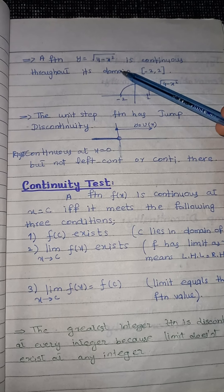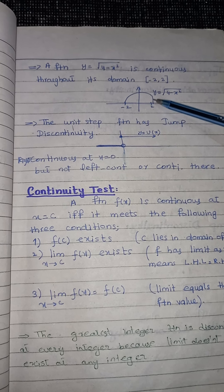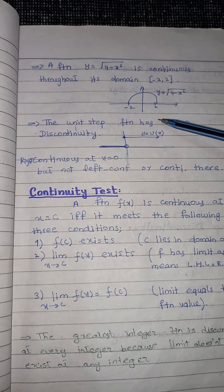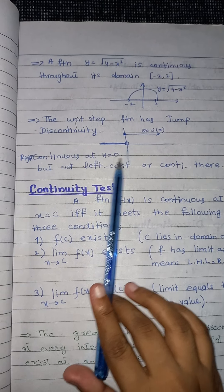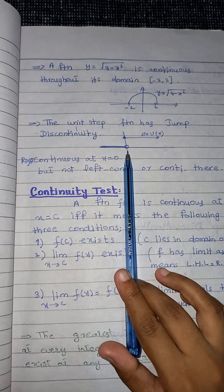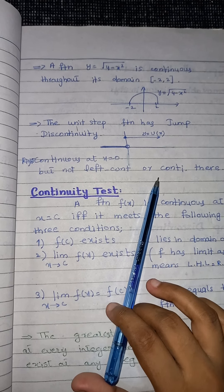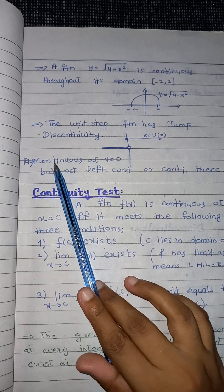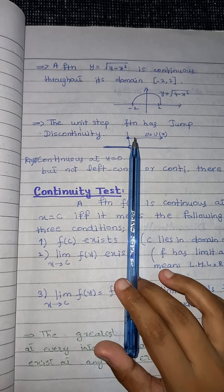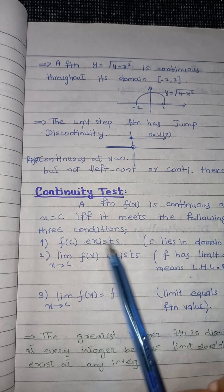Here I write that one function is continuous throughout its domain, which we can also clearly see from its graph. The unit step function is discontinuous because it is only right-continuous at x = 0 — when we approach from the right it is continuous, but left-continuity does not exist at that point. Since right continuity and left continuity are not equal, the function is not continuous there.